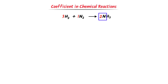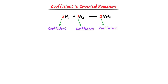This 3 with hydrogen gas is known as the coefficient of hydrogen gas. This 1 with nitrogen gas is known as the coefficient of nitrogen gas, while this 2 with NH₃ is known as the coefficient of NH₃. Here I will teach you three different stories of coefficients.